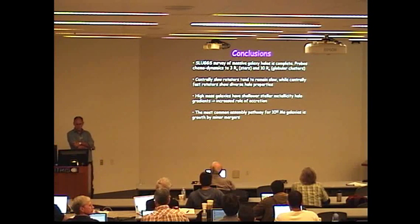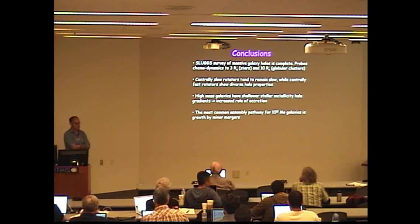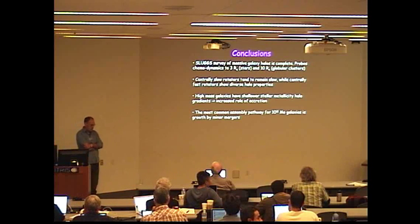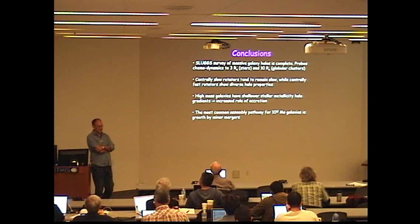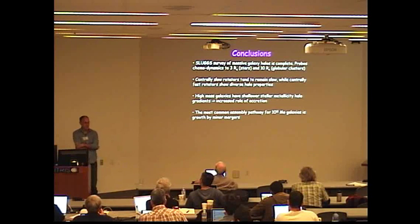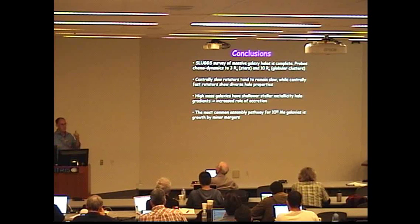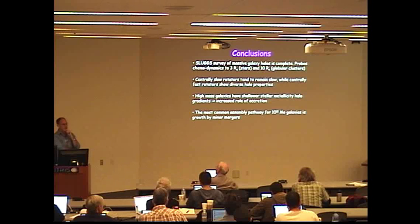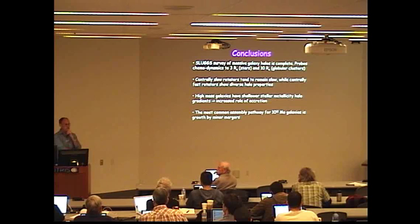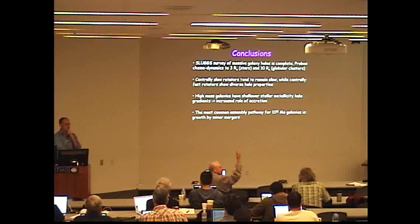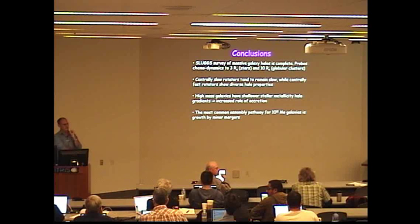Question: Do you see any ionized gas in any of your galaxies? Generally not, so this is a sample of early type galaxies. One or two of them are known to contain some ionized gas. We're working at the calcium triplet line end, around 8500 angstroms, so ionized gas is not something that we've probed.